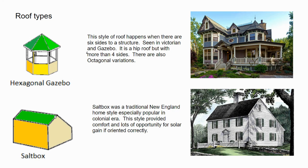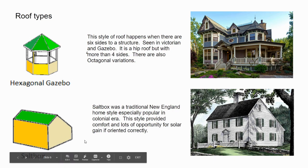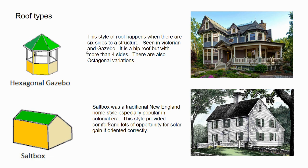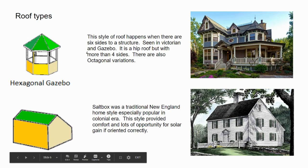A saltbox is basically a variation of a gable where the ridge is not centered. The reason it was so popular in the New England era is that it heated very well. The fireplace is centrally located in the traditional saltbox, and if the south side of the house faced south you had a lot of natural solar gain. It was very important for New Englanders to keep warm in harsh winters, and saltboxes did a very good job of that.